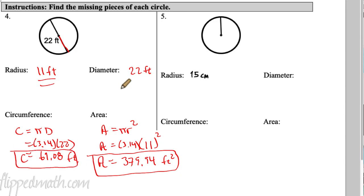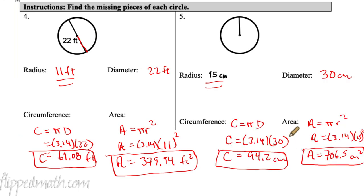Now try number five on your own — pause the video. The radius is 15, which gives a diameter of 30. Cherry pie is delicious: 30 times 3.14 equals 94.2 centimeters for the circumference. For the area: 3.14 times 15 squared, which is 225, equals 706.5 square centimeters. Make sure you check your units.